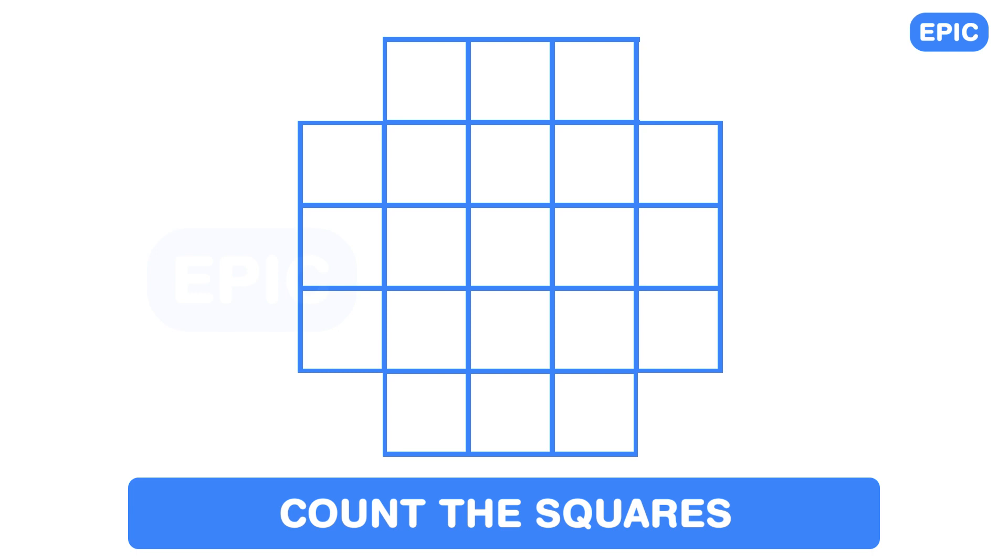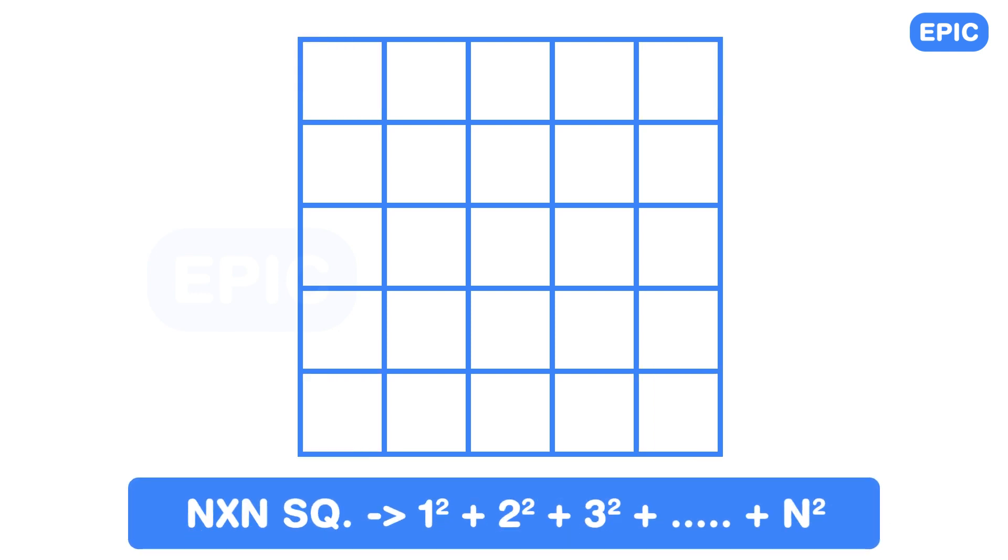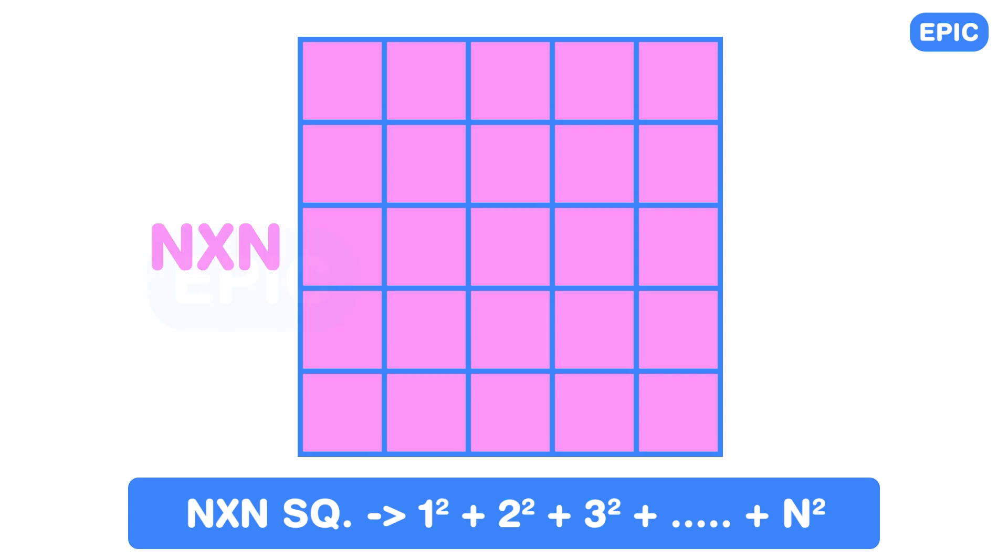As discussed in that video, the total number of squares in an N x N square will be the sum of squares of the first N natural numbers. An N x N square will have 1 N x N square, which is the largest. It will have 2 squared, that is 4, N minus 1 x N minus 1 squares.